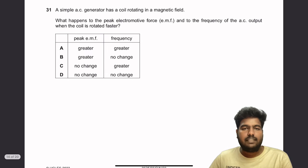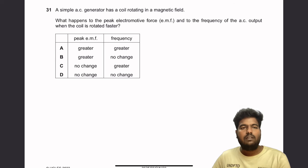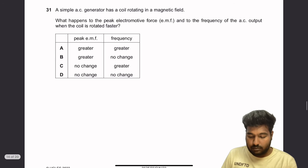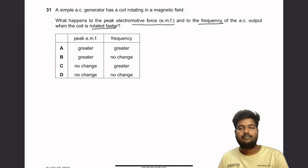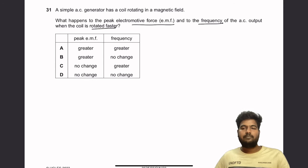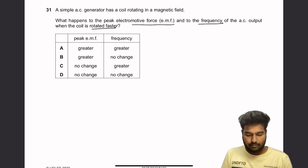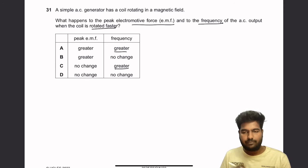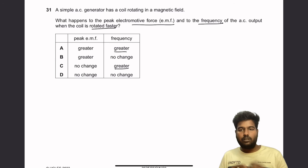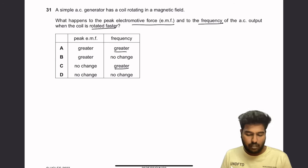Question 31: A simple AC generator has a coil rotating in a magnetic field. What happens to peak EMF and frequency of AC output when the coil rotates faster? Frequency increases because the coil completes more cycles per second. Peak EMF also increases because the rate of change of flux is greater. So A is the right answer.